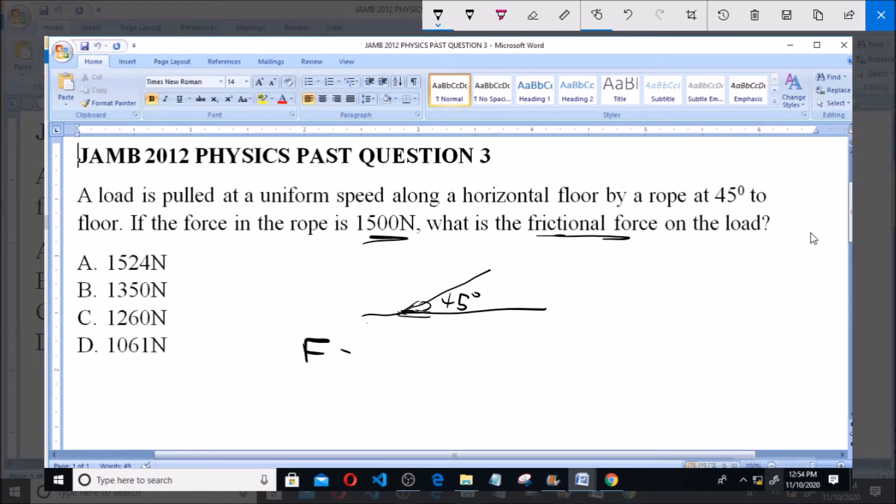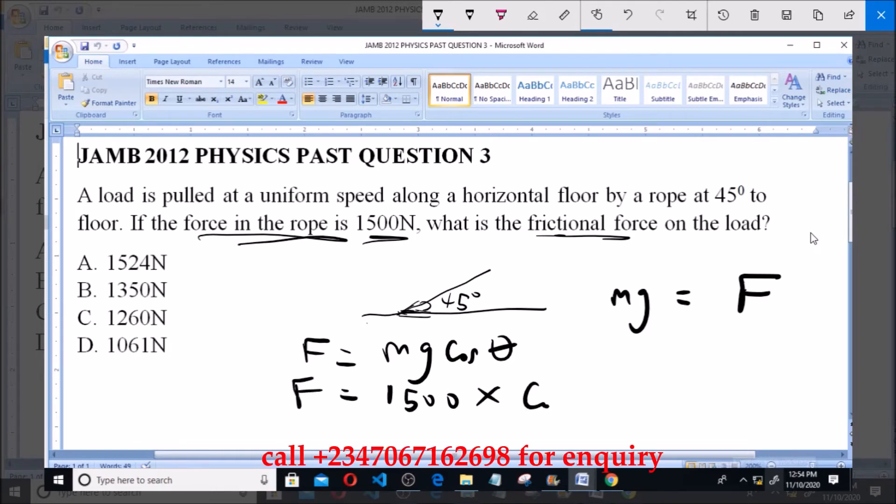Now the frictional force will be given as mg cos theta, where mg will be equal to the force, which in this case is the force in the rope. So, F is equal to 1500 multiplied by cos theta,